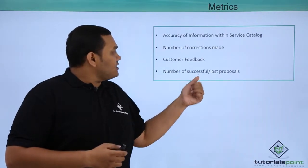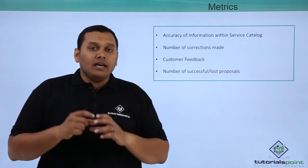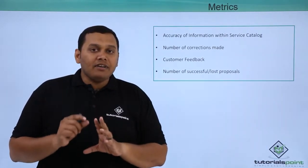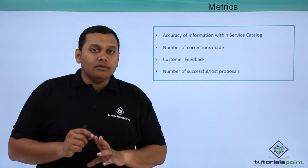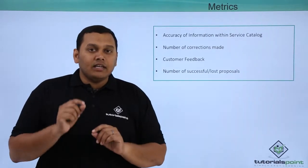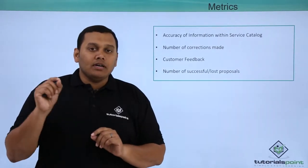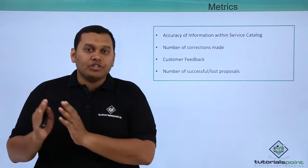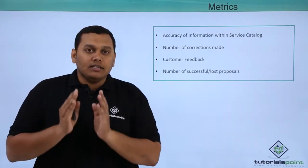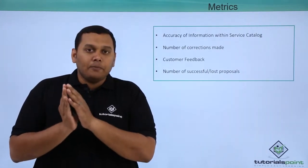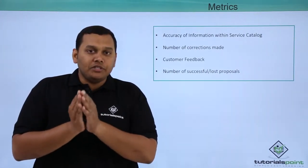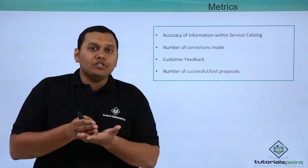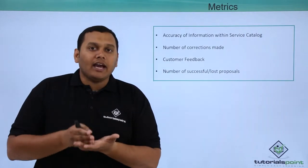The fourth metric is number of successful or lost proposals. In the document there is a column stating the number of successful proposals and number of lost proposals — that means any proposals we missed or any proposals we acquired.